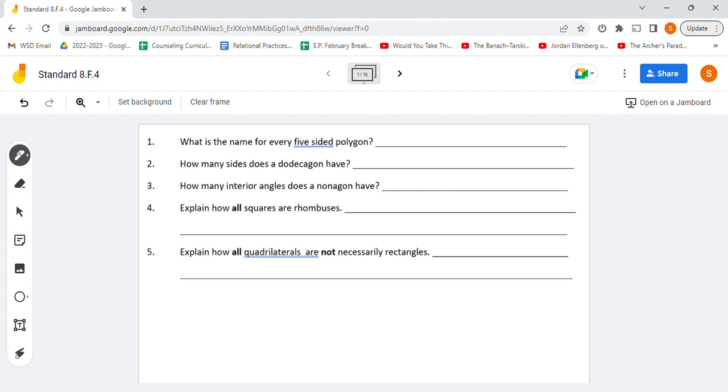For this first set of questions, we have a variety of definitions that we need to understand. The first one is polygon. A five-sided polygon would be known as a pentagon.